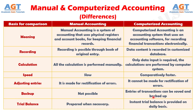Number 7. In manual accounting, the trial balance is prepared only when it is required, whereas in computerized accounting, an instant trial balance is provided on a daily basis.